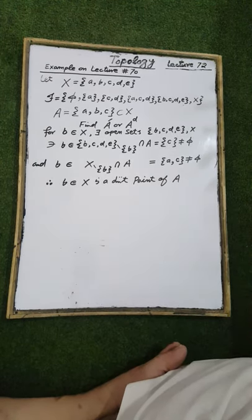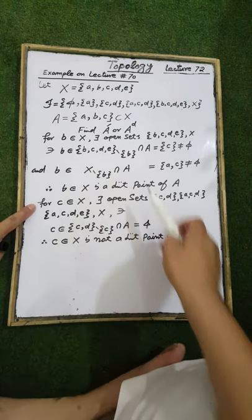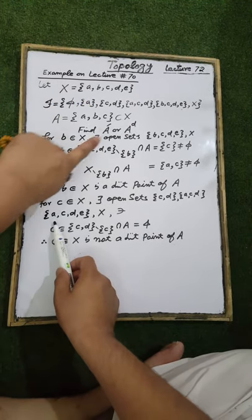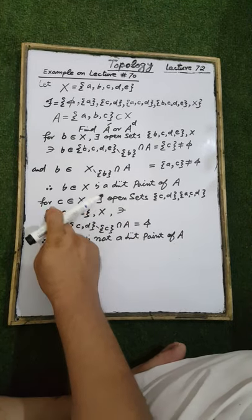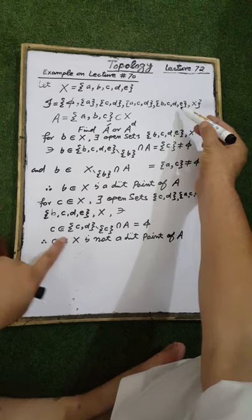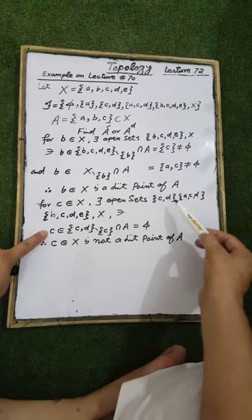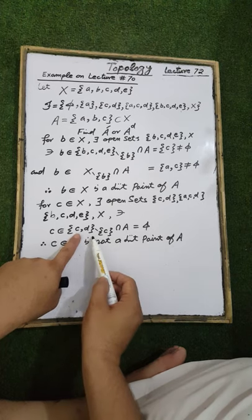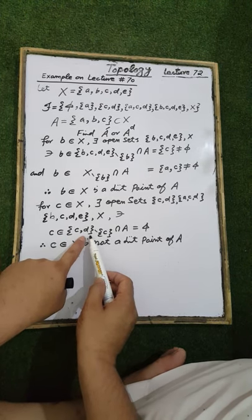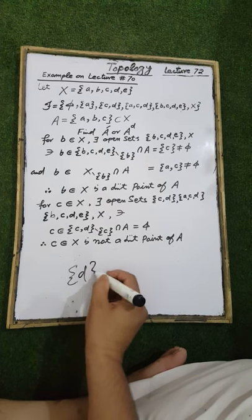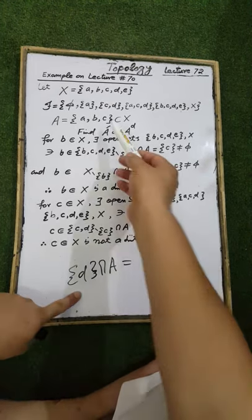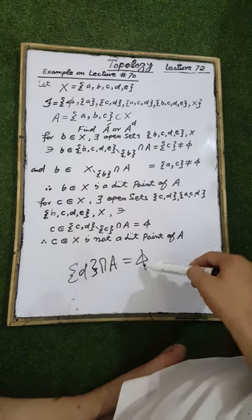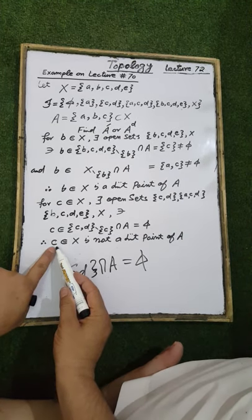For an element c belonging to the ground set X, there exist open sets containing element c: the open set containing {c, d}, the open set containing {a, c, d}, the open set containing {b, c, d, e}, and the ground set X. The set containing c, d minus the set containing element c, intersected with A — the result of the difference is the set containing only element d, and the intersection with A is an empty set. Therefore, the element c is not a limit point of the set A.